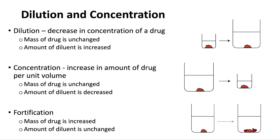The first way we'll alter concentration is by diluting it. In dilution, we decrease the concentration of the drug, but the mass of the drug is unchanged. When we think of concentration as mass over volume, with dilution the mass doesn't change — what we are doing is increasing the volume. The same amount of drug is now in a larger container, so the concentration decreases because the denominator increases while the numerator stays the same.